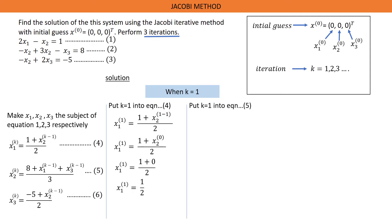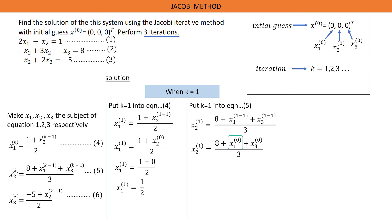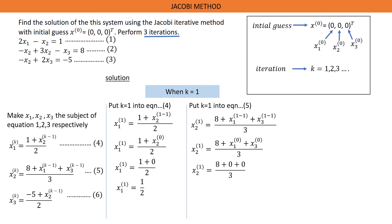Now put K equals 1 into equation 5. Wherever we see K in equation 5, we put 1 there. Solving this gives us S2^(1) equals 8 plus S1^(0) plus S3^(0) all over 3. The initial guess value of S1 is 0 and S3 is also 0, so we replace both with 0. Solving this further gives us S2^(1) equals 8/3.